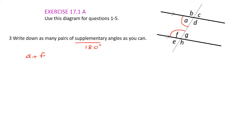Let's have a look at some more: d and g also add up to 180 degrees. There are some others for you to discover. E plus b add up to 180 degrees, and h plus c add up to 180 degrees. See if you can find any others. Once you've checked your answers, go on to the next question.